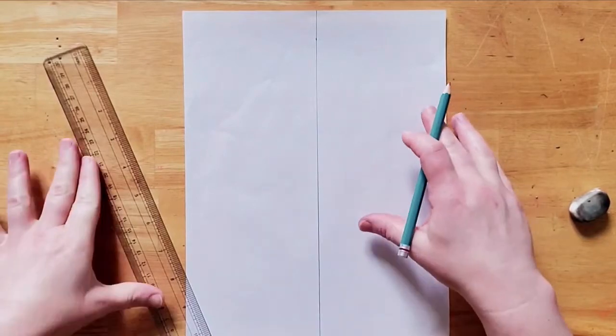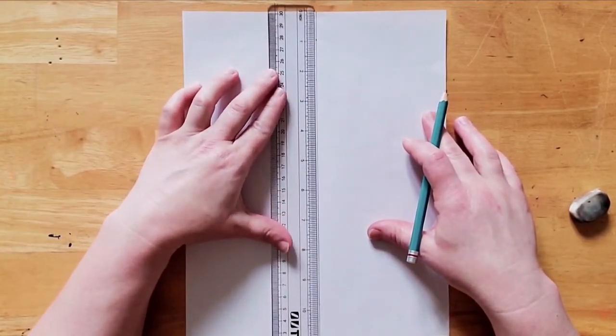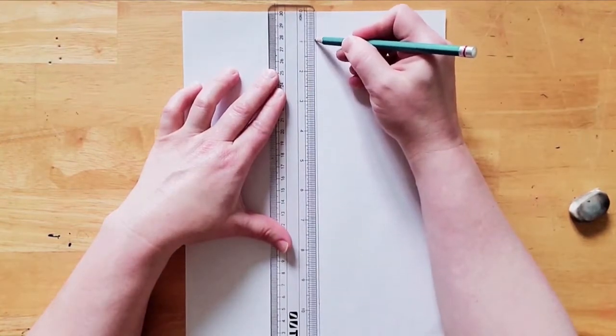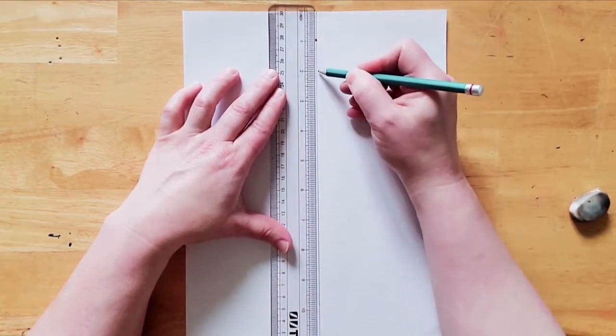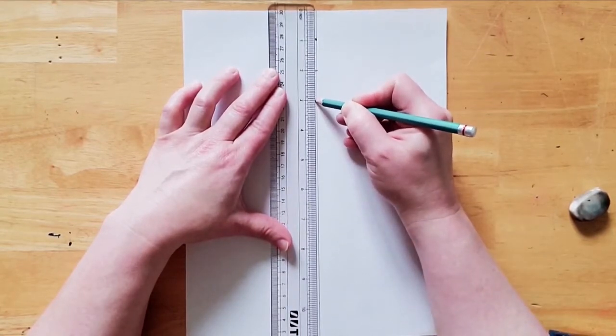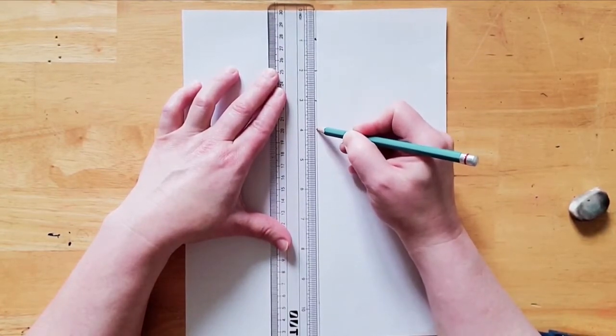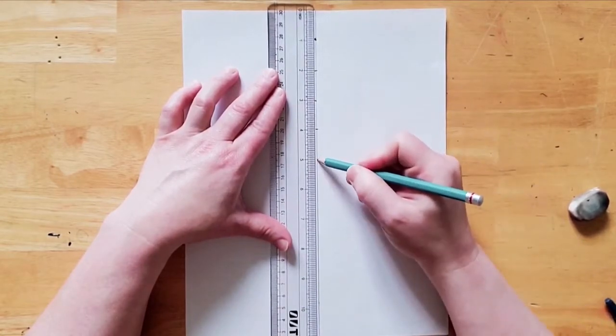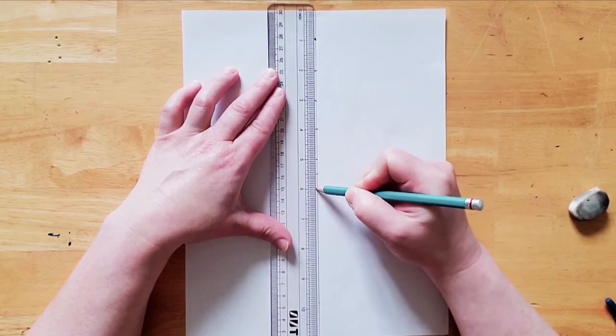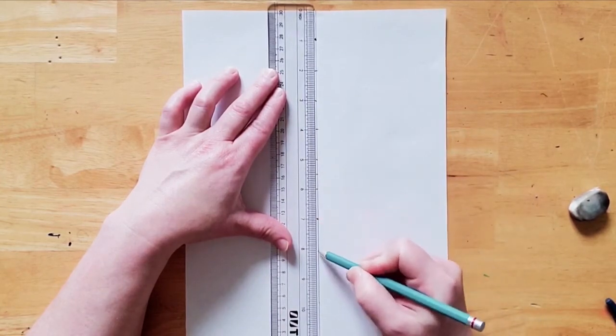Next, we're going to make several marks along our line at one inch intervals. After the fifth line, we're going to do a half inch and a half inch, and then go back to one inch intervals.